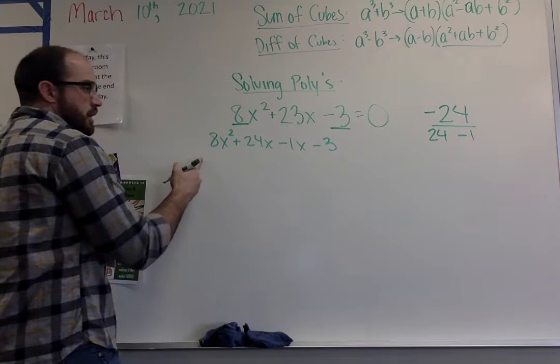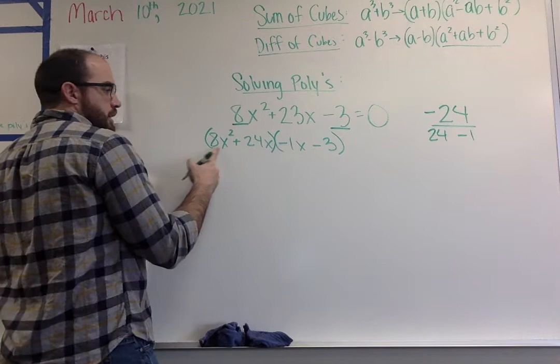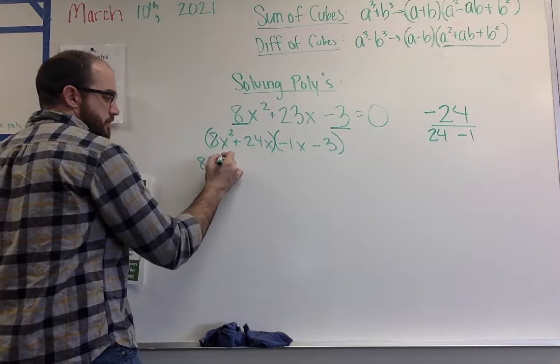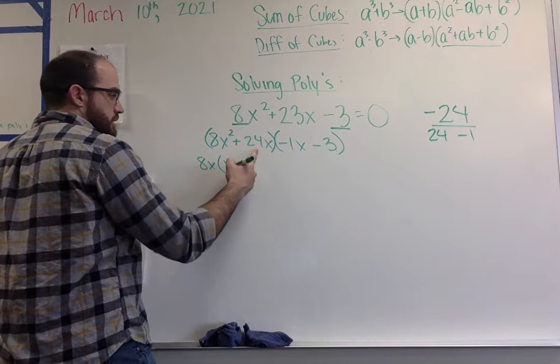I want to find factors of negative 24 that multiply to get negative 24, but add together to get my positive 23. So in that case, I'd have 24 and negative 1. I go through plugging these in, so I've got 8x² + 24x - 1x - 3.